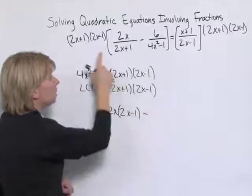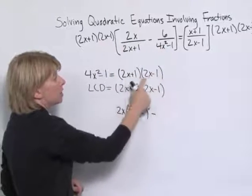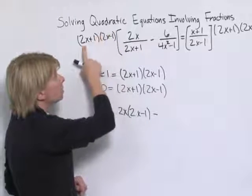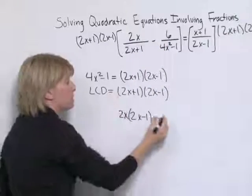Minus the LCD times the second fraction. Remember that this denominator factored into exactly our LCD. So this entire LCD will divide out with that denominator, leaving us with the 6.